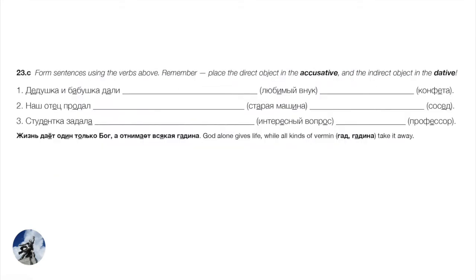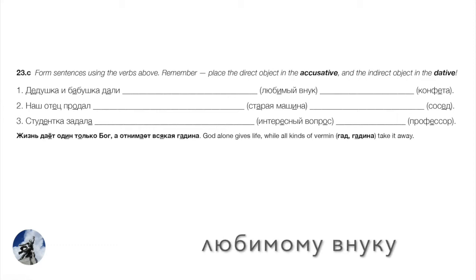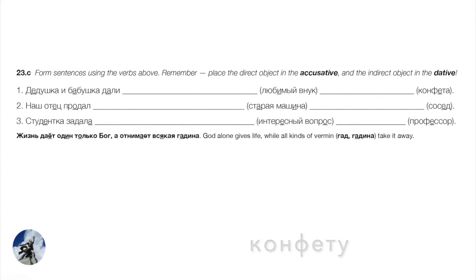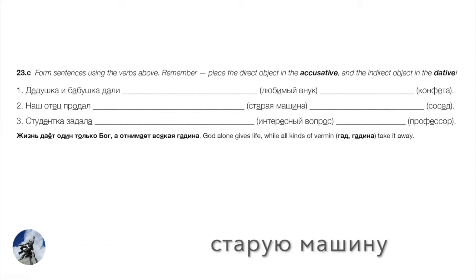Let's fill in a few blanks. Number one: Дедушка и бабушка дали blank любимому внуку конфету — grandparents gave a piece of candy to their favorite grandson. Любимый внук needs to appear in dative: любимому внуку. Конфета in accusative: конфету. Number two: наш отец продал blank — our father sold an old car to a neighbor. Old car is direct object accusative: старую машину. To the neighbor, dative: соседу.